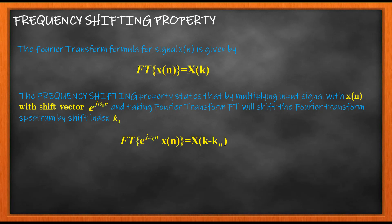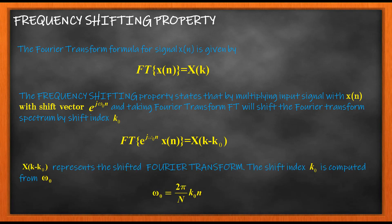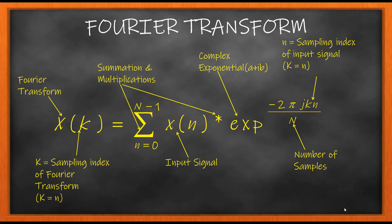The frequency shifting property states that if you take x of n, multiply it with e to the power of j omega-0 n and take its combined Fourier transform, you get a shifted frequency spectrum. The frequency spectrum is shifted by an amount equal to k0, which is contained in e to the power of j omega-0 n, where omega-0 equals 2 pi over N times k0. This k0 is what represents your shift index.